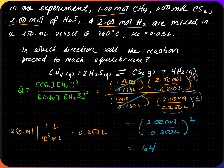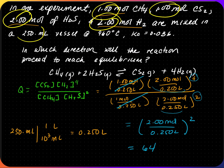There are three significant figures throughout. The Q is 64.0. Comparing Q to K: K was 0.036, and Q is 64.0. Q is much greater than K, meaning there is too much product. Therefore, the reaction shifts towards the reactants.